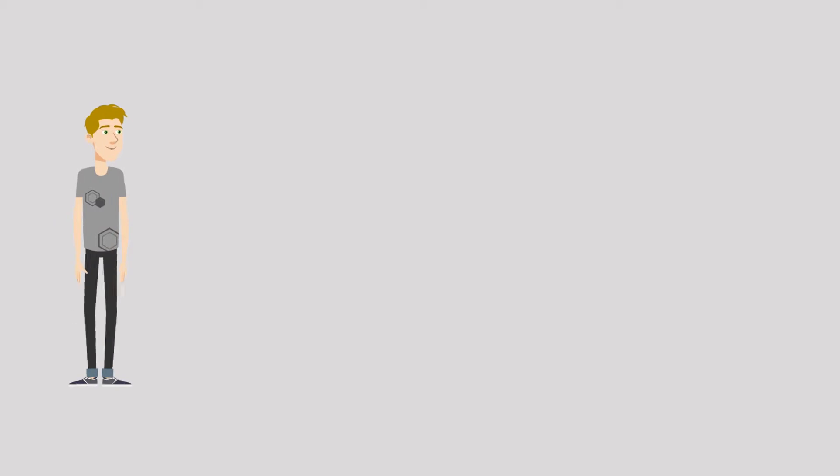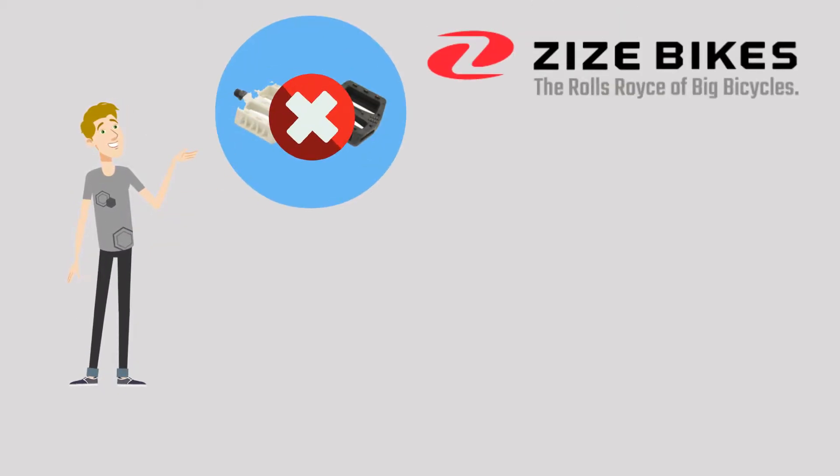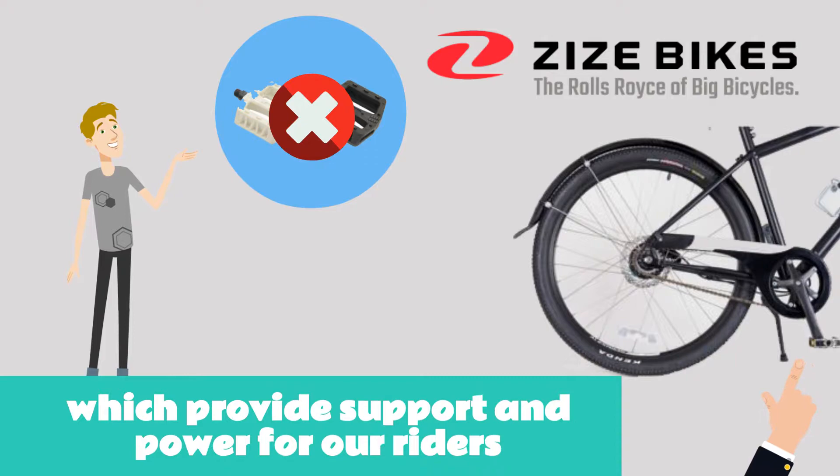No aluminum or plastic pedals for Zeiss Bikes. We use only steel pedals, which provide support and power for our riders.